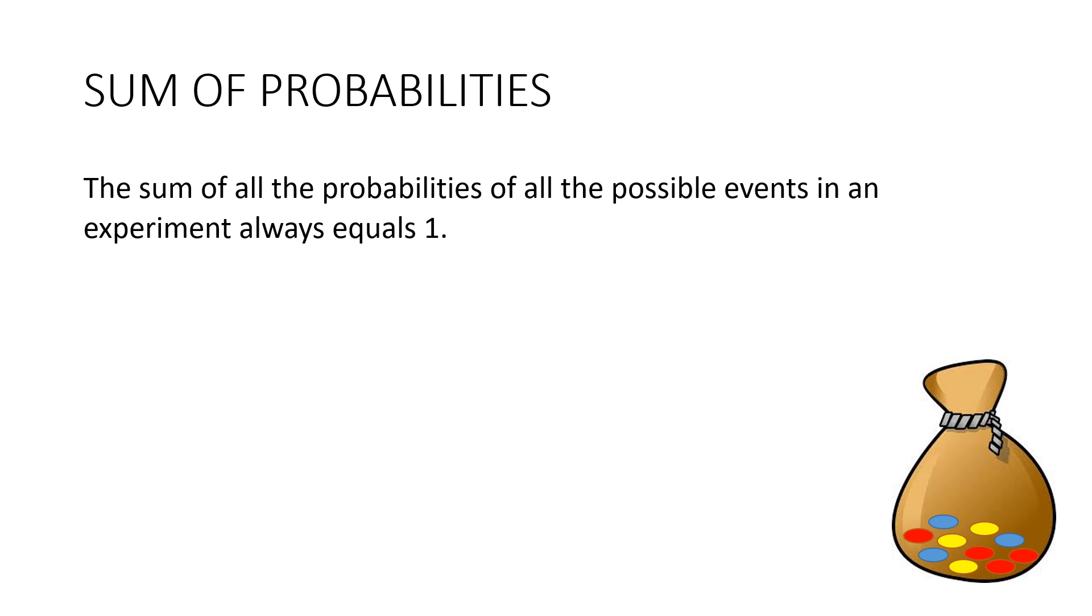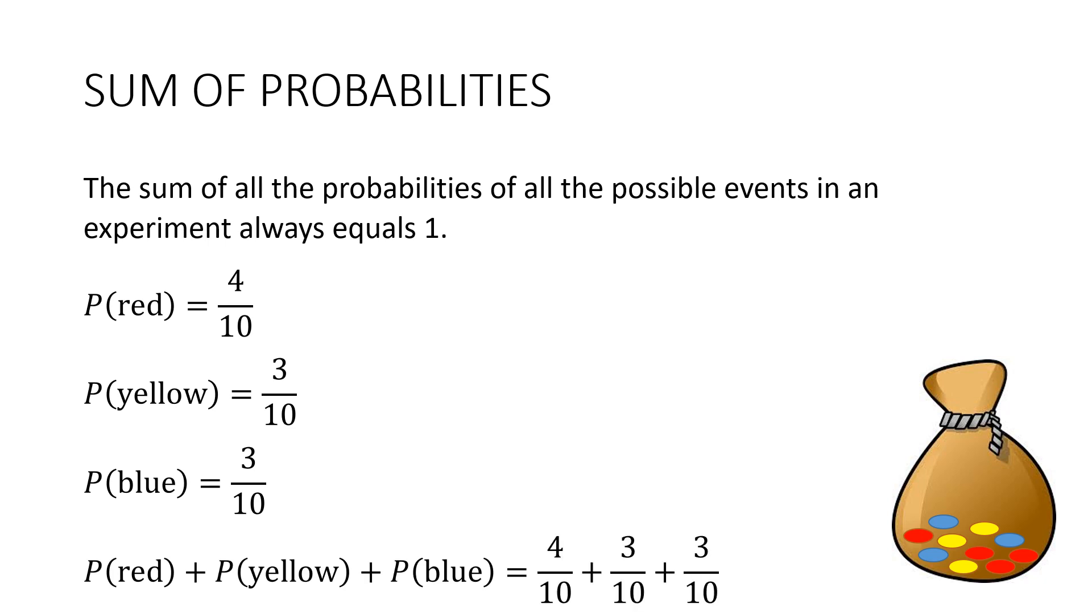Now the sum of all the probabilities of all of the possible events in an experiment always equals 1. Remember our counters example? The probability that it's a red counter is 4 on 10. The probability that it's yellow is 3 on 10. And the probability that it's blue is 3 on 10. So if we add those all up we get 4 on 10 plus 3 on 10 plus 3 on 10 which is 10 over 10 which is 1.